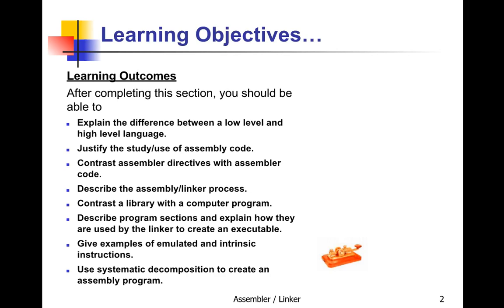Our learning objectives for this section are: you should be able to explain the difference between a low- and a high-level language, justify the use of assembly code and why you're studying it, contrast assembler directives with assembler code, describe the assembler-linker process, contrast a library with a computer program, describe program sections and how they are used by the linker to create an executable, give examples of emulated and intrinsic instructions, and use systematic decomposition to create an assembly program.